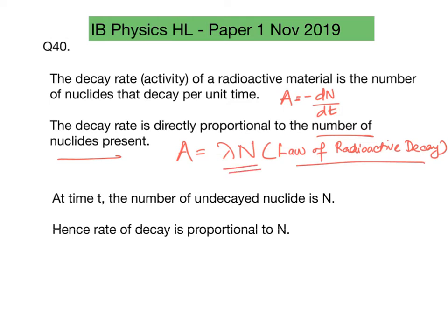At time t, the number of undecayed nuclei given in this question is n. Therefore, the rate of decay is proportional to n. The answer is A.